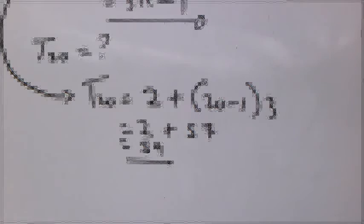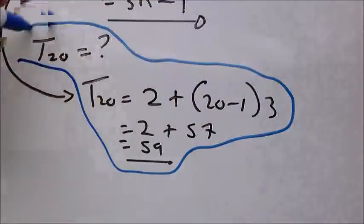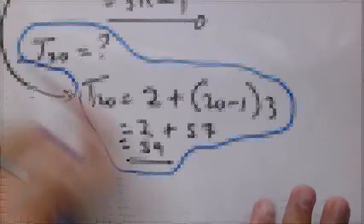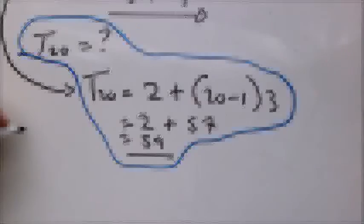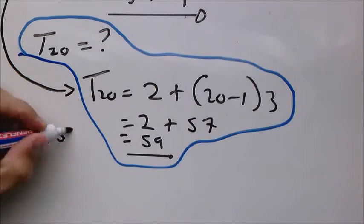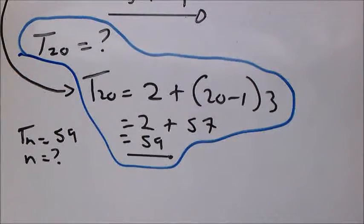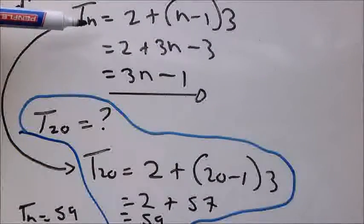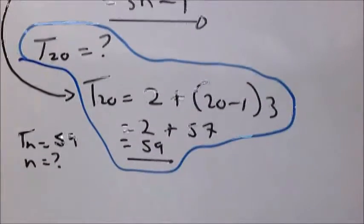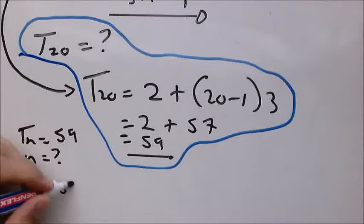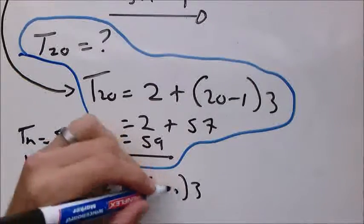These questions can be asked in another way as well. Let's assume you didn't know this answer, and I tell you the term value Tn equals 59. What is n? We start again from the formula, and our unknown will be n. So now you say 59 equals 2 plus bracket n minus 1 times 3.